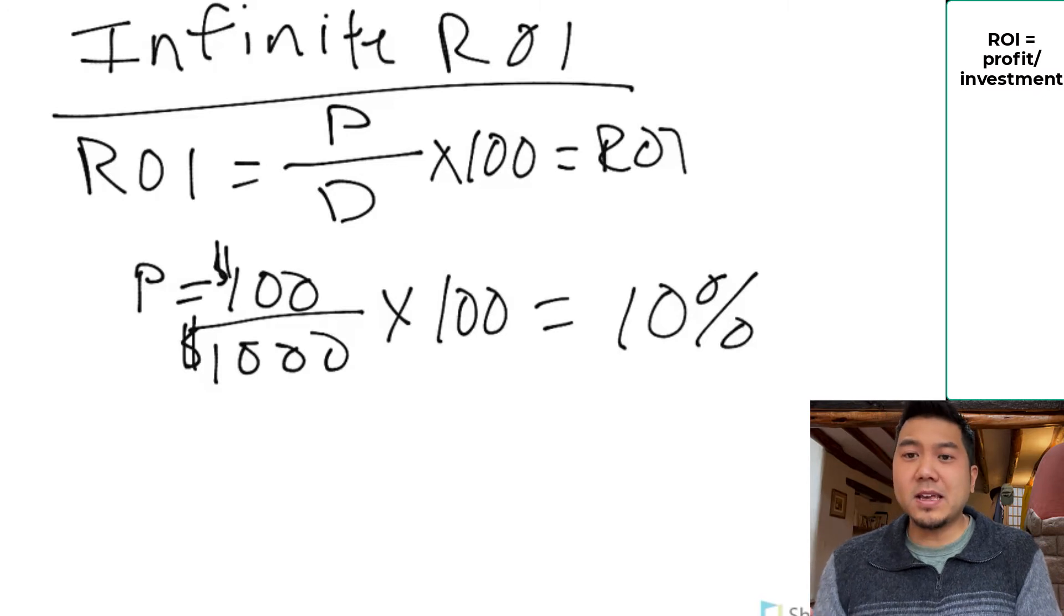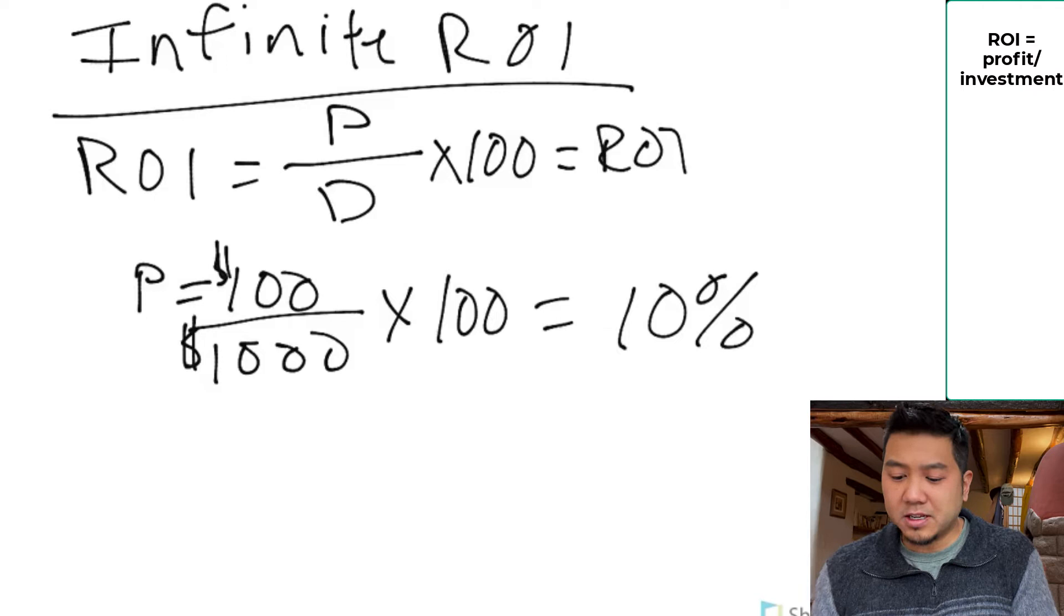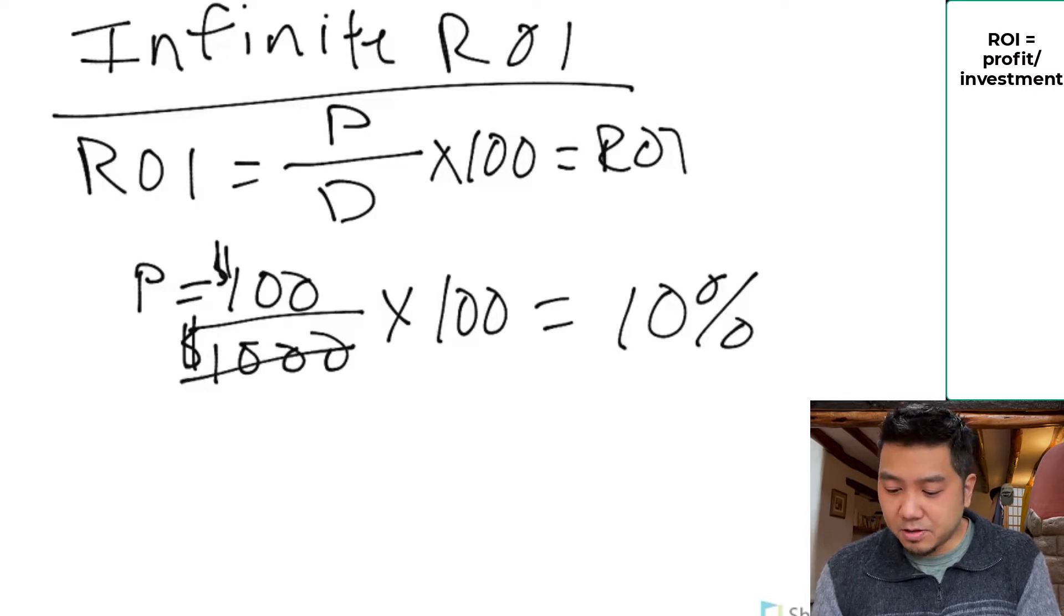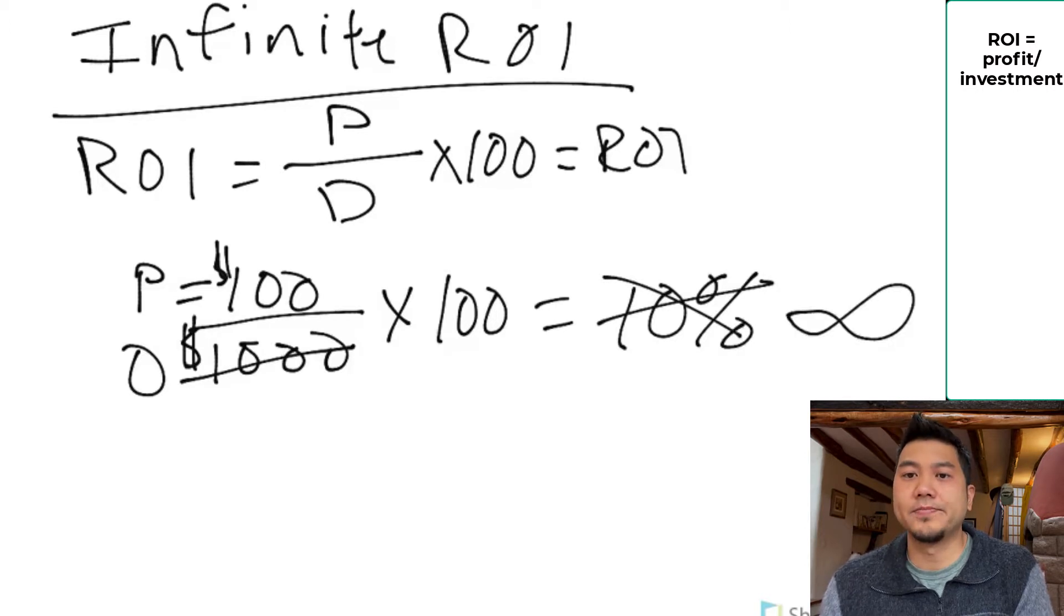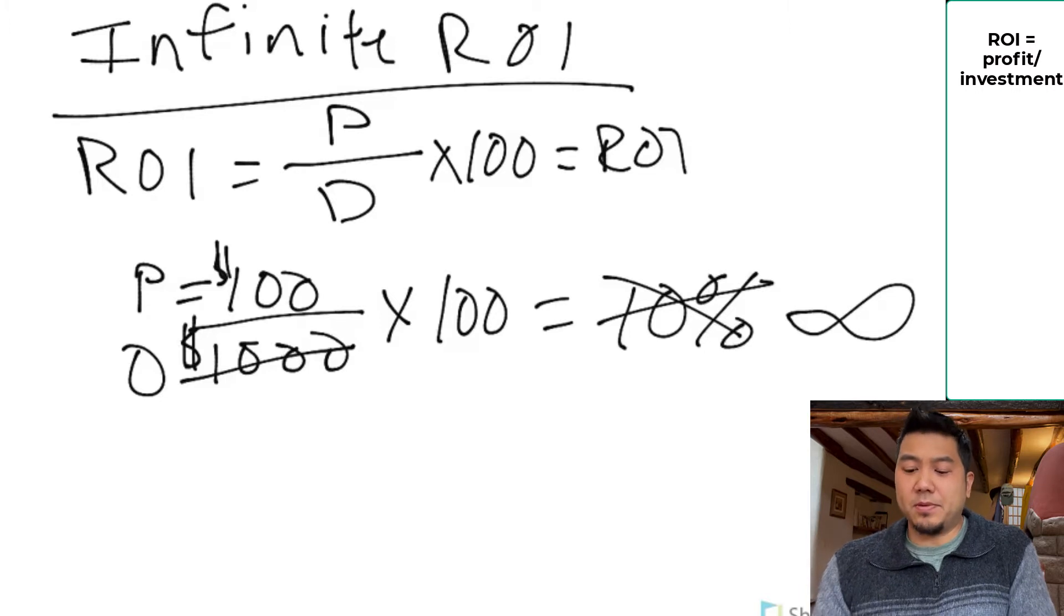Now how do we make it an infinite ROI? That's the question. Infinite ROI is how do I make $100 without having to put this money down? What if I had to put $0 down to make $100? That would give us infinite ROI. So simple enough example, right? Now how do we make it happen?